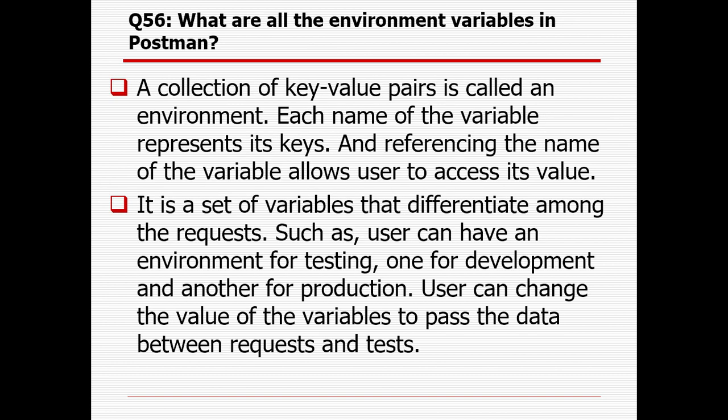What are environment variables in Postman? A collection of key-value pairs is called an environment. Each name of the variable represents its key, and referencing the variable name allows the user to access its value. It is a set of variables that differentiate among requests — users can have an environment for testing, one for development, and another for production. Users can change the value of the variable to pass data between requests and tests.